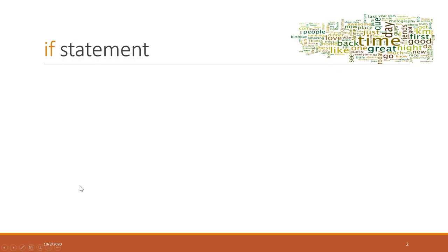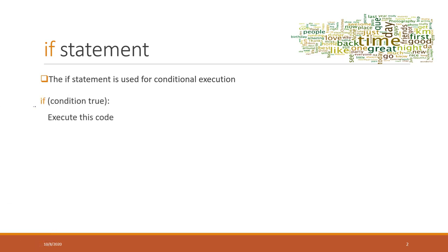The first thing we're going to talk about is the if statement. The if statement is used for conditional execution — when we want to compare the values of different variables in Python. The syntax is: if some condition is true, colon, and remember the whitespace or indentations, then we execute this code. If this is false, we do not execute this code.